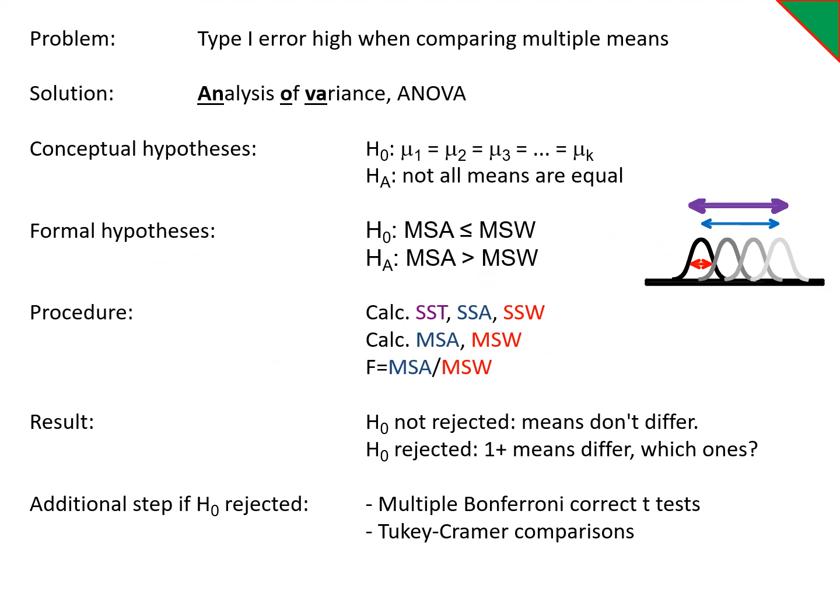Okay, to recap, we have this problem. That's why we're doing the ANOVA. Here are our conceptual hypotheses. Here are our formal hypotheses. This is what we calculate. These are our results. How do we figure out what's different? Bonferroni corrected t-test or Tukey-Kramer comparison intervals.